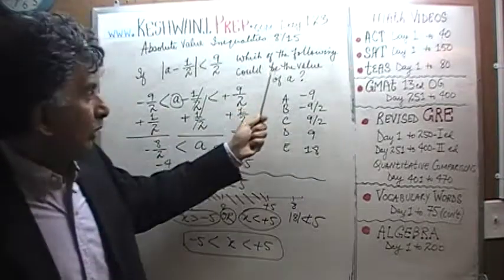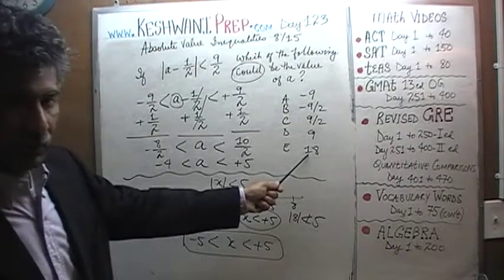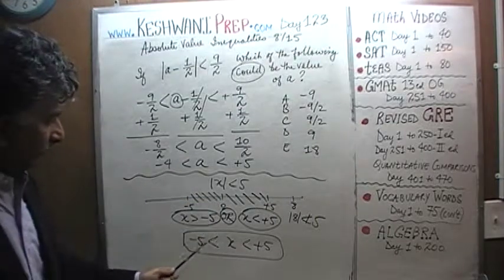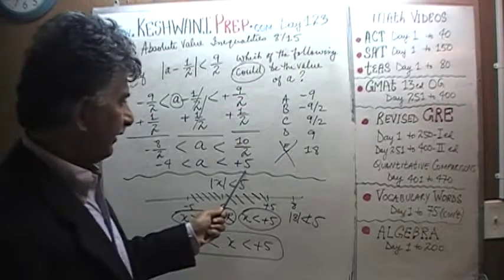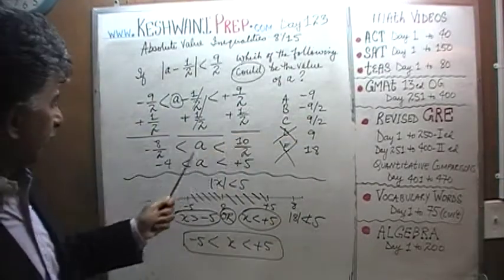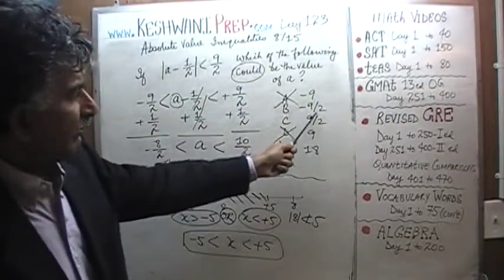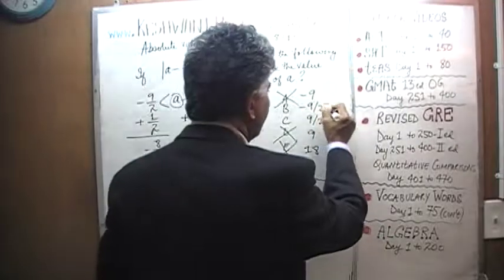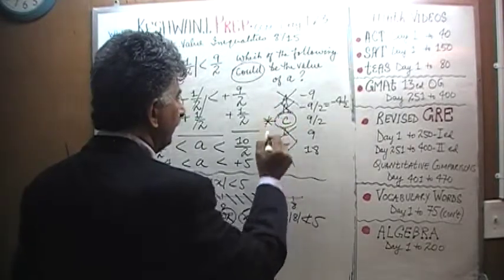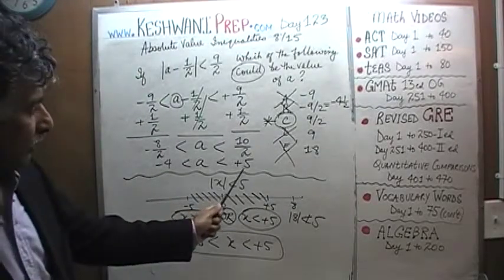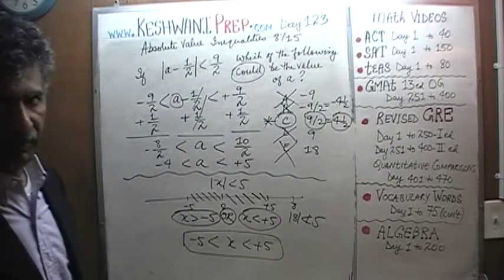The question asks which of the following could be the value of A — somewhere between negative four and positive five. Is 18 going to work? No, because it has to be less than positive five. How about negative nine? No, it has to be more than negative four. What about negative nine-halves, which is negative four and a half? It lies to the left of negative four, so it's not allowable. The answer is C — nine-halves, or four and a half — because four and a half is less than five.